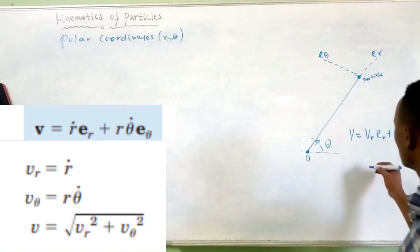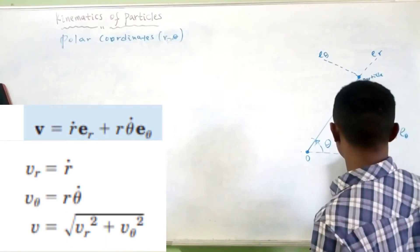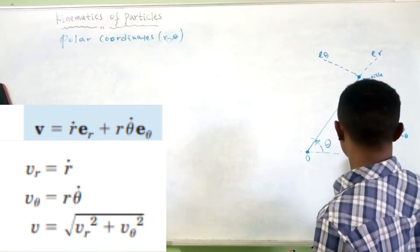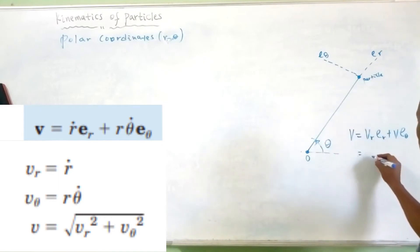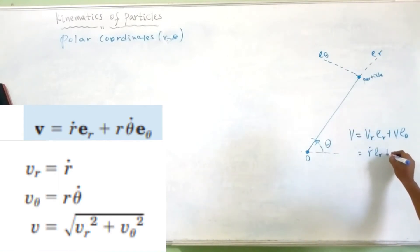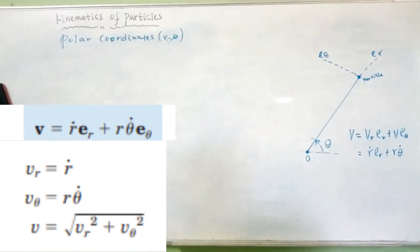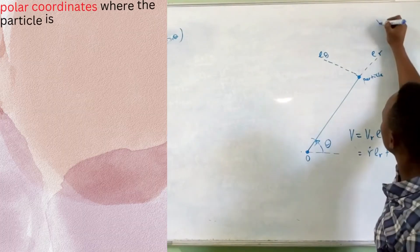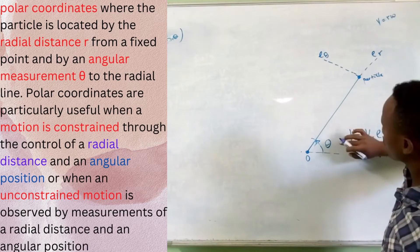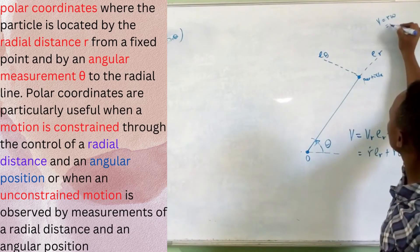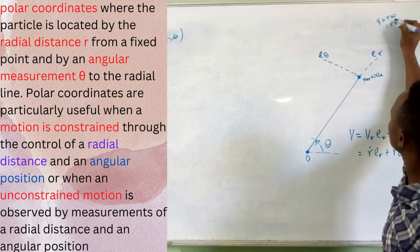Acceleration is not the same as velocity. The velocity is expressed as r-dot times e_R, plus r times theta-dot times e_theta. That means velocity equals r-dot along the radial direction plus r*theta-dot along the angular direction.